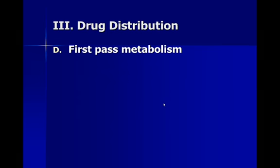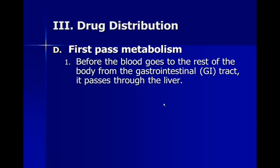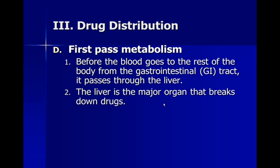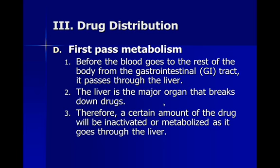We talked previously about first-pass metabolism. Before blood from the gastrointestinal tract reaches the rest of the body, it passes through the liver and is metabolized — often into an active form that allows the drug to actually function. The liver is the major organ that breaks down almost every drug we take, which is why the liver is so important and why drug abuse can be so damaging to it. A certain amount of a drug might be completely inactivated, or it might be changed into something else to become effective.